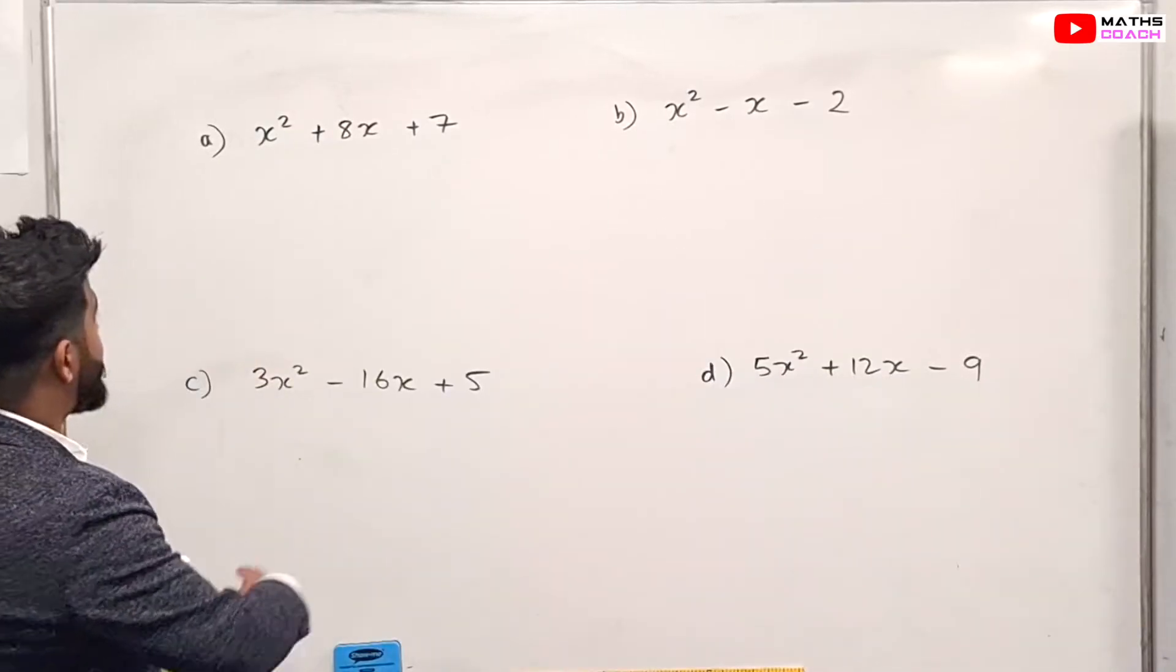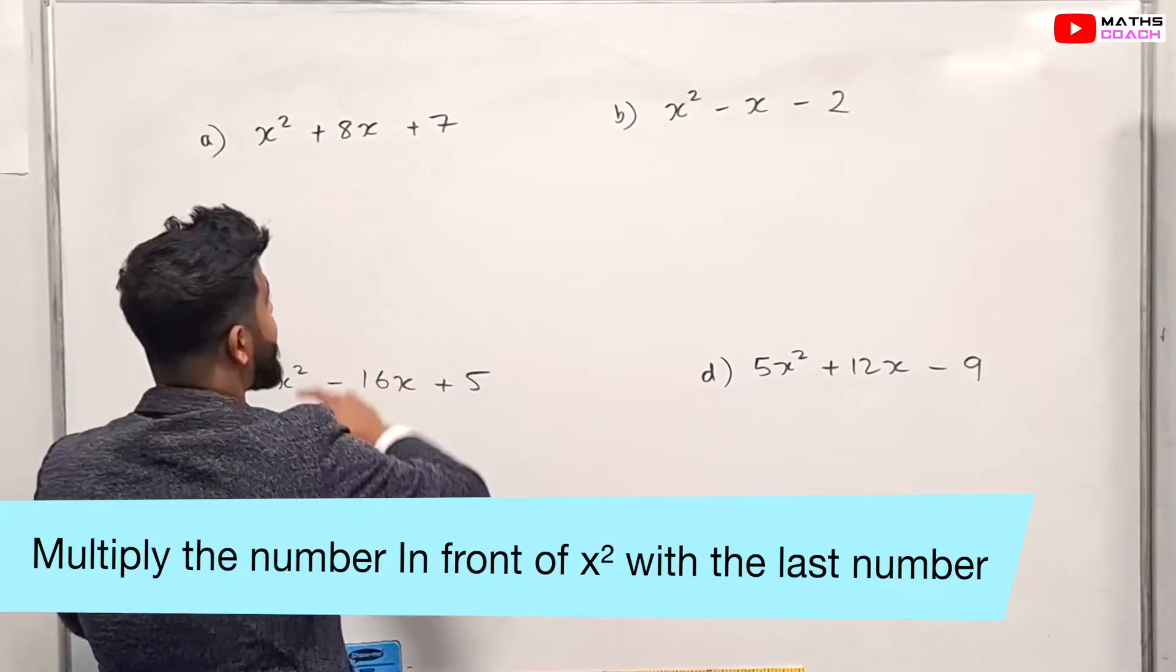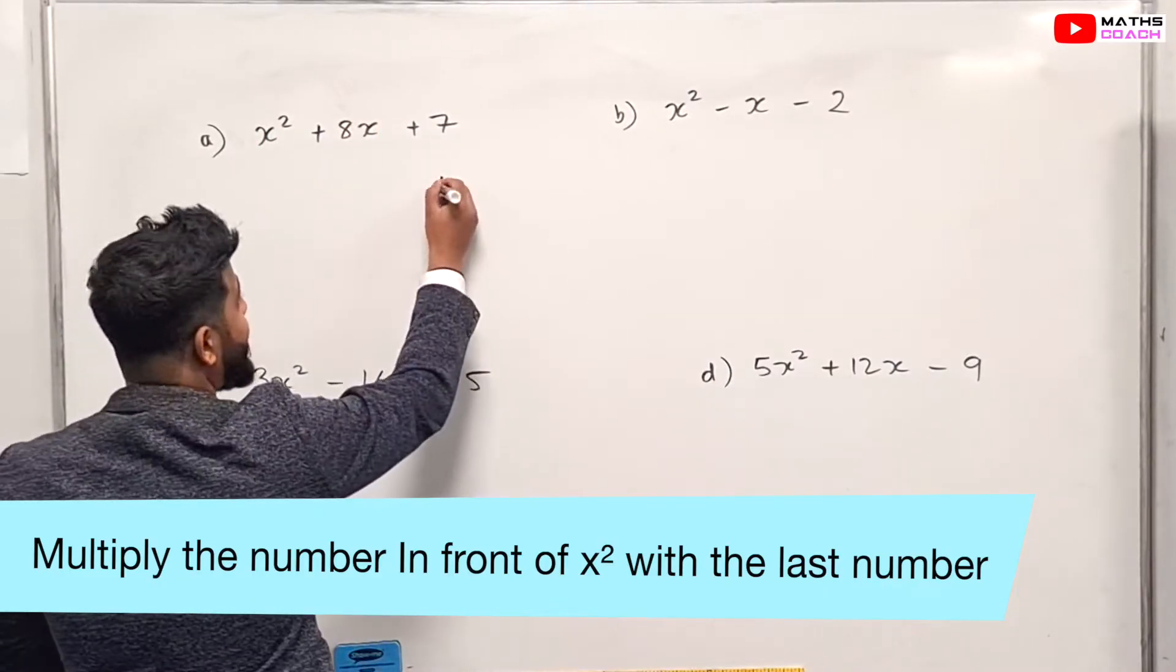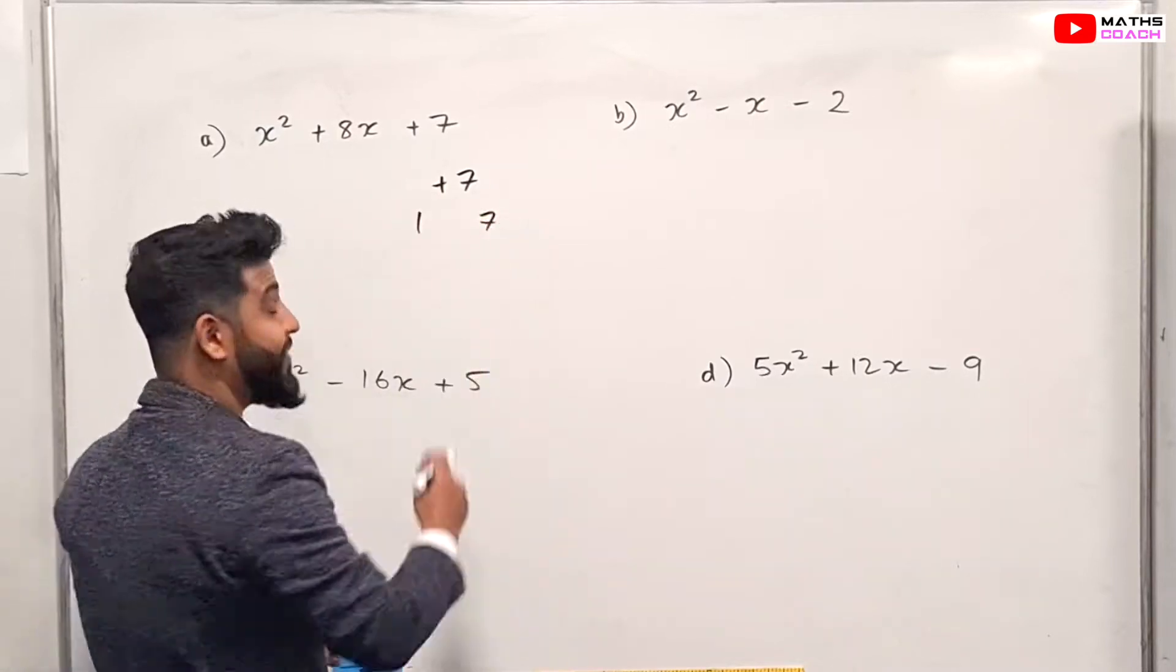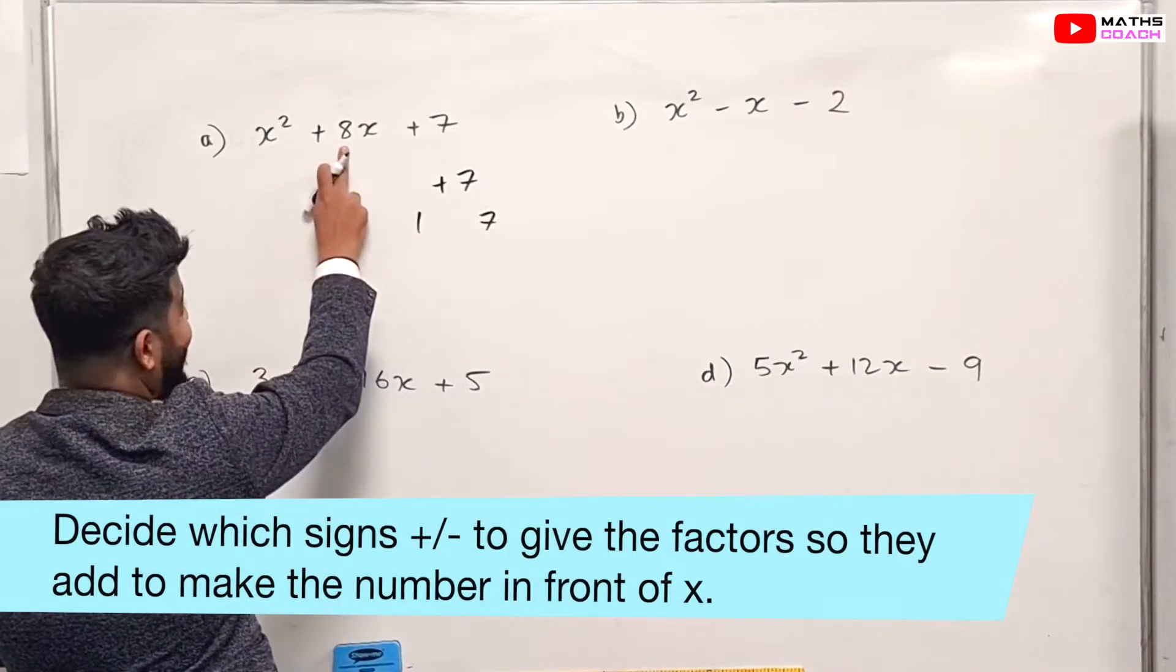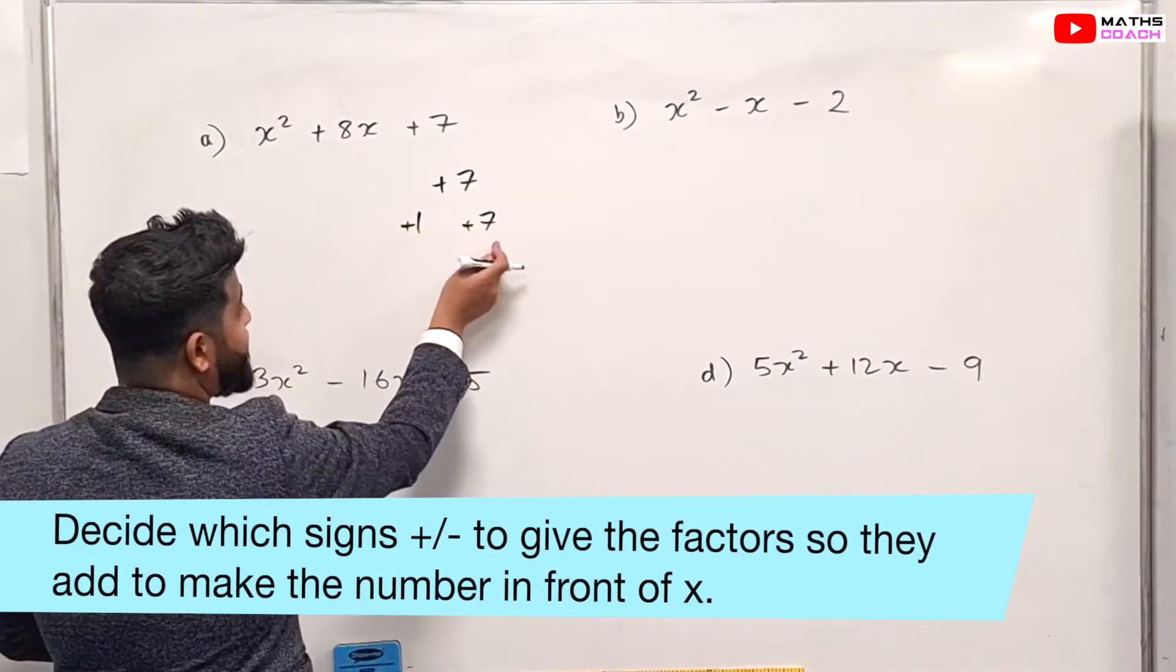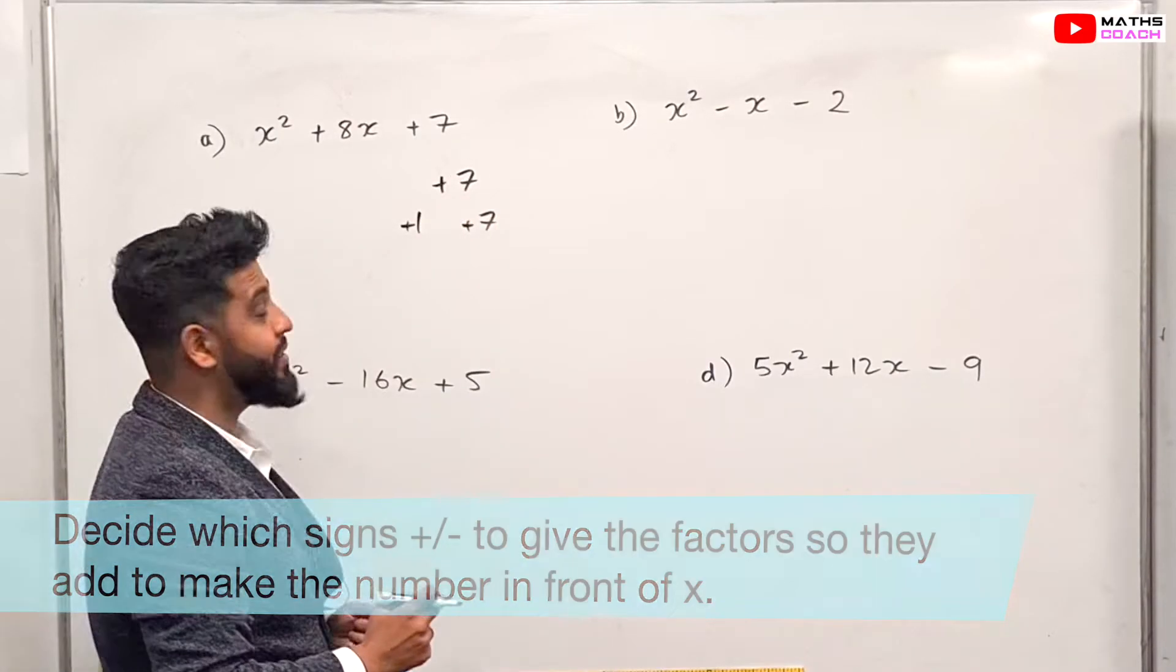How do we answer this? Well, the coefficient of x squared here is one. It's not written, but it is there. So just do one times seven, and one times seven is plus seven. And then you find the factors of seven, which is one and seven, and that's it. In terms of signs, we want to make an eight, so both of them have to be positive, because when you add them they have to give you eight, and when you multiply them they have to give you plus seven.